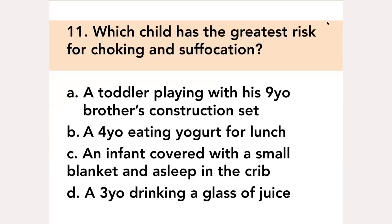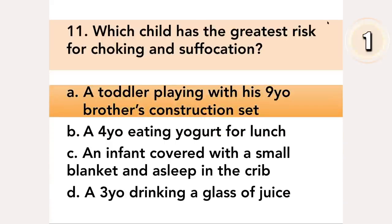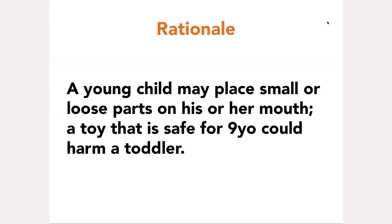Which child has the greatest risk for choking and suffocation? A. A toddler playing with his 9-year-old brother's construction set. Answer: A. A young child may place small or loose parts in his or her mouth. A toy that is safe for a 9-year-old could harm a toddler.